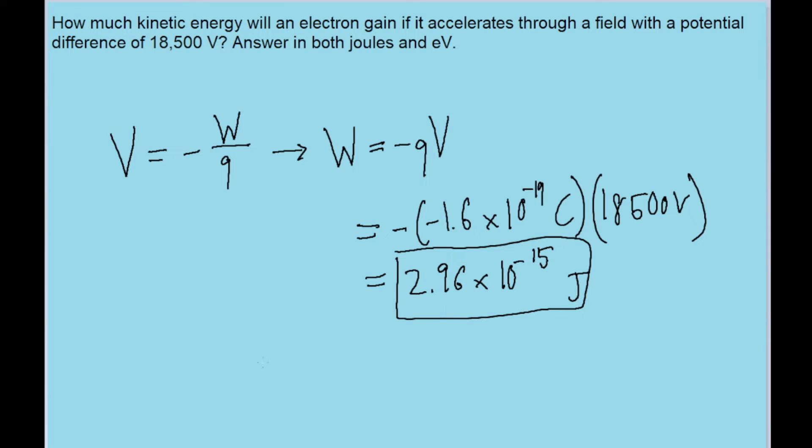Now the problem mentions it also wants an answer in electron volts. And we can do this by simply using the exact same equation. But instead of using 1.6 times 10 to the negative 19 for the charge, we can use 1E, 1 of the elementary charge. So let's do that. This is equal to the negative of 1E times the same amount of potential difference, 18,500 volts.